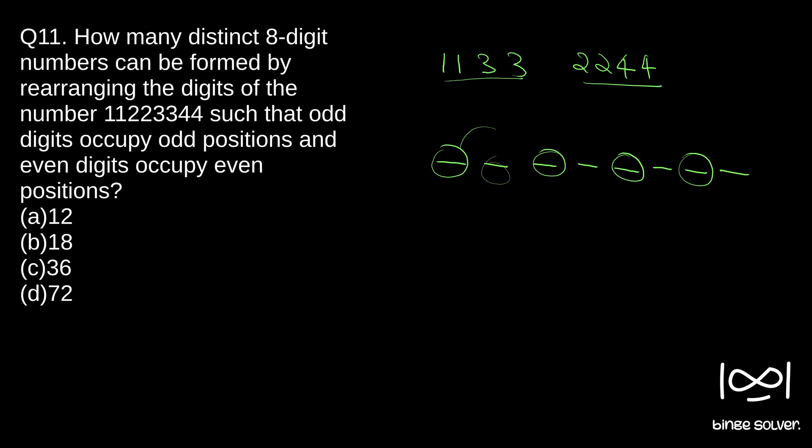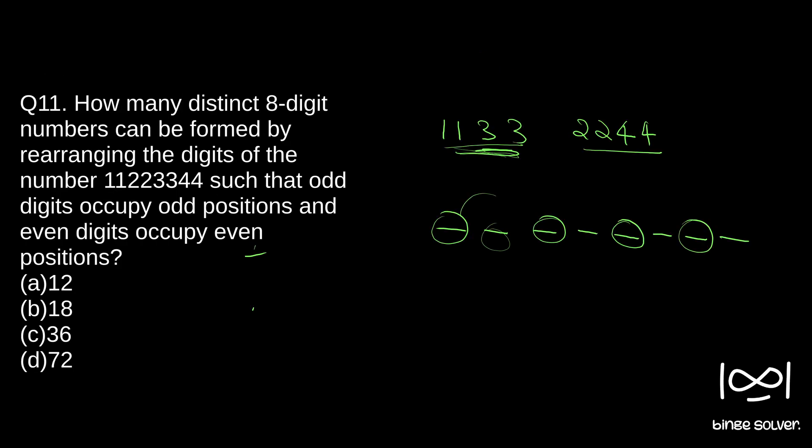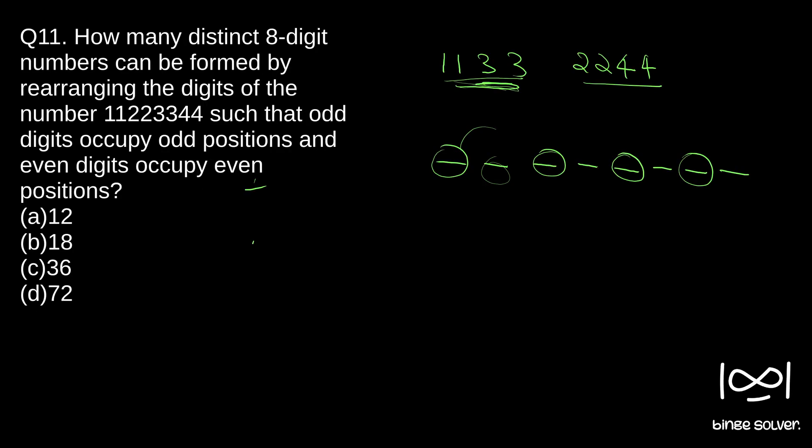But there is repetition also. We have 4 odd digits and 4 positions, and 2 digits are repeating also. So we are going to use the concept, the special case of permutation with repetition. We have 4 positions. First, we will arrange the odd digits and then arrange the even digits as a second step. So first, arranging odd digits, we call this Job 1.